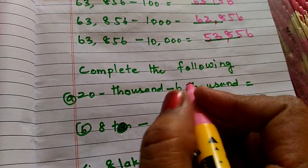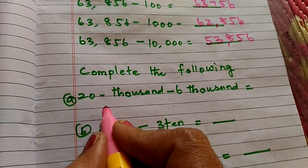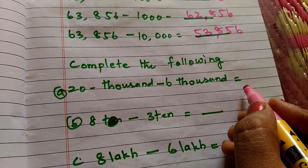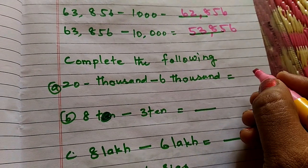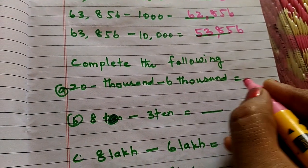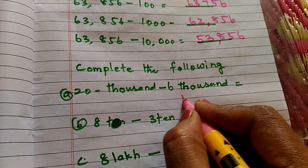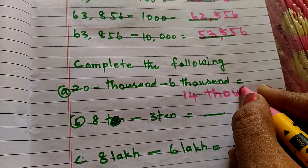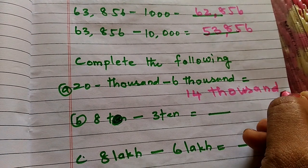Next, complete the following: 20,000 minus 6,000. Answer is 14,000.